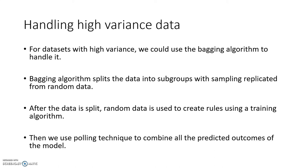After the data is split, random data is used to create rules using a training algorithm. Whatever algorithm you use, based on that, each subgroup is going to generate different rules.